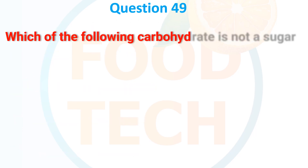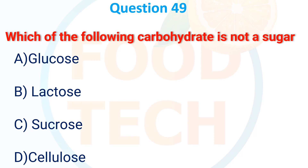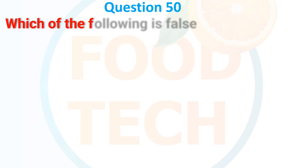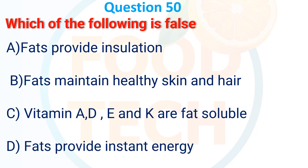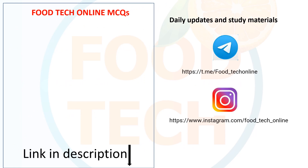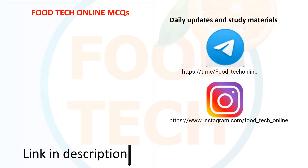Question 45: Which of the following carbohydrates is not a sugar? A. Glucose, B. Lactose, C. Sucrose, D. Cellulose. The answer is D. Cellulose. Question 46: Which of the following is false? A. Fats provide insulation, B. Fats maintain healthy skin and hair, C. Vitamins A, D, E, K are fat-soluble, D. Fats provide instant energy. The answer is D. Fats provide instant energy. For more videos, link in description. For daily updates and study material, follow our Telegram and Instagram channels. Please subscribe and share with your friends. Thank you.